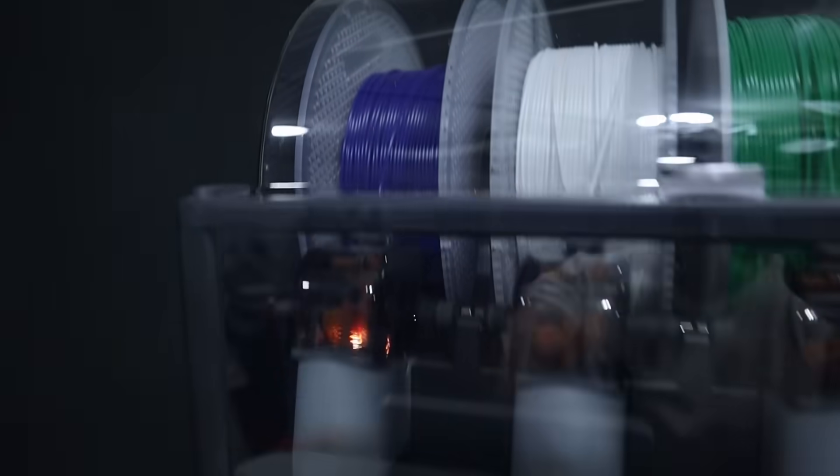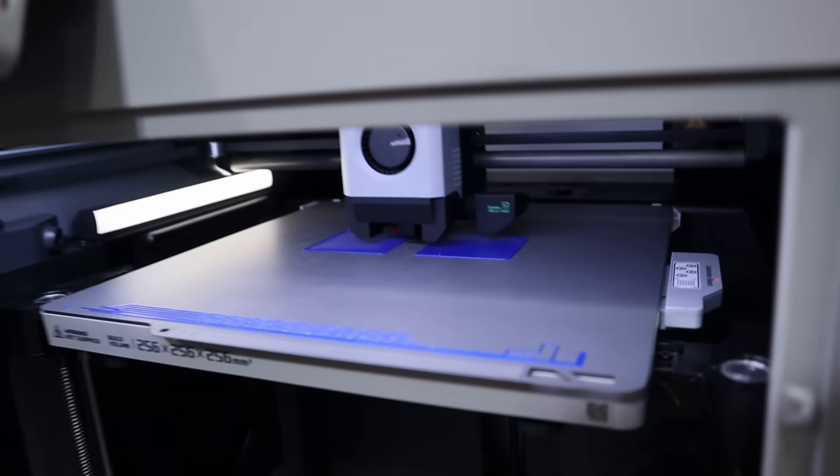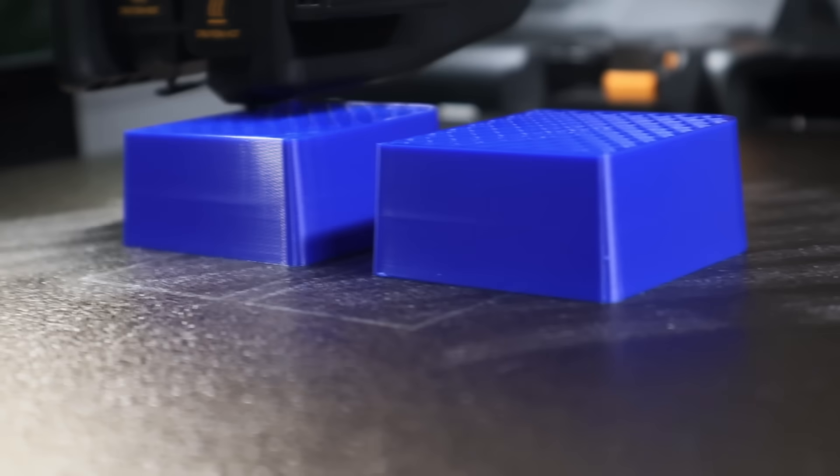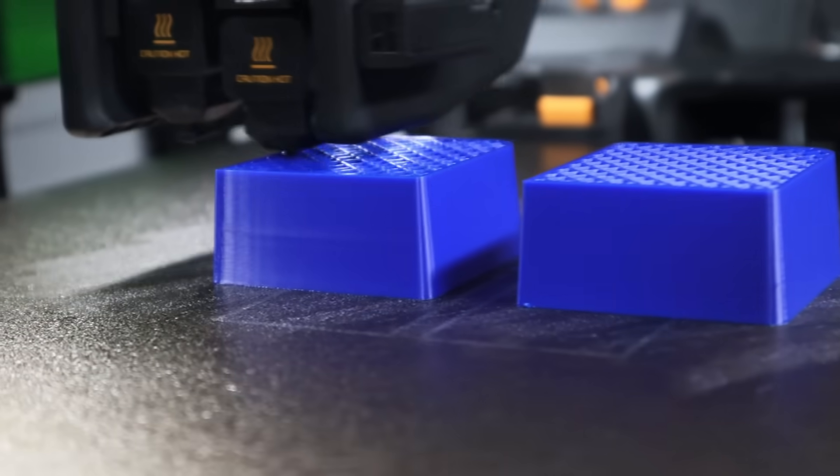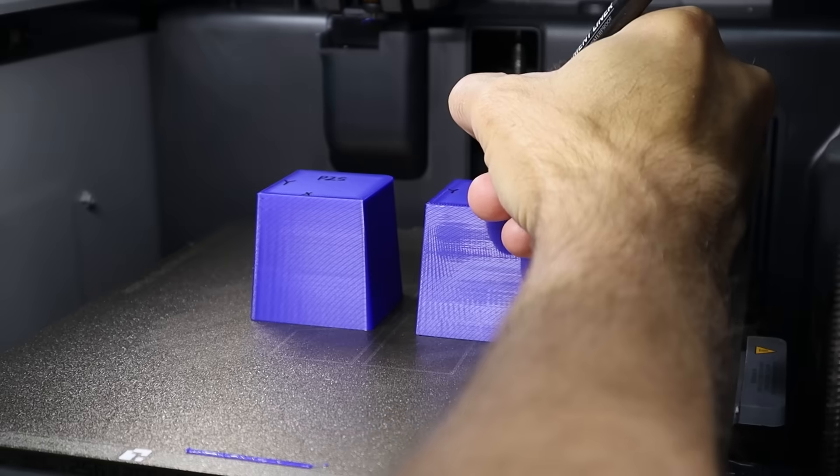So we're going to test the same material, same print settings, same dryness, not just the P2S or the X1C, but also my H2D and my Chidi Plus 4 to get that apples to apples comparison. So are VFAs the same? Are they worse or could they be better on the new P2S? Let's find out. So stick around.